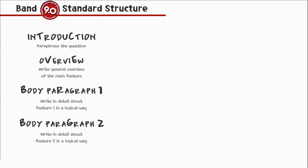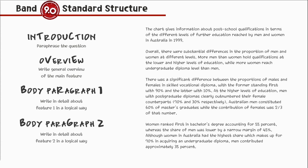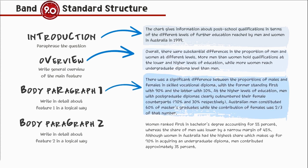Let us also check the band 9 standard structure for IELTS Writing Task 1. The report is composed of four paragraphs: an introduction, where you have to paraphrase the question statement; an overview, where you write the general overview of the main features; body paragraph 1, where you write in detail about feature 1 in a logical way; and body 2, where you write in detail about feature 2 in a logical way.